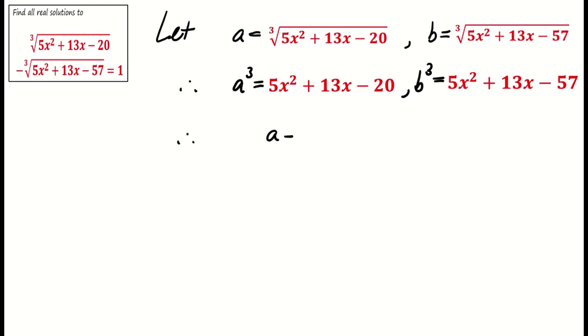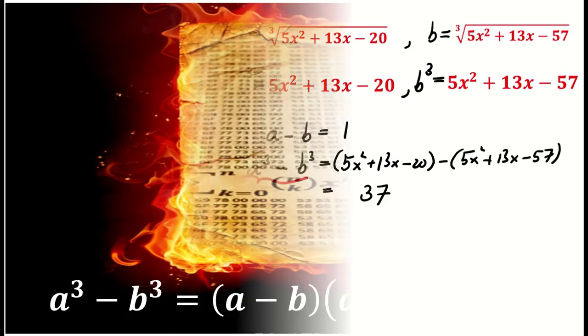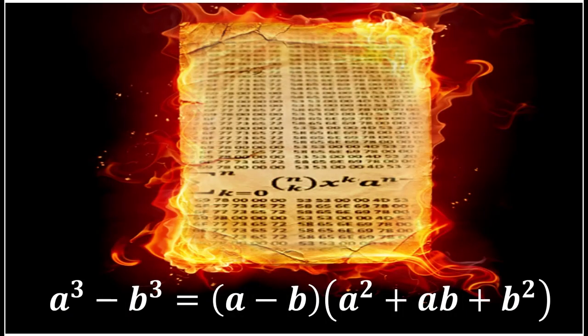From the condition a - b = 1 and direct calculation, a³ - b³ gives 37. Using the formula a³ - b³ = (a - b)(a² + ab + b²)